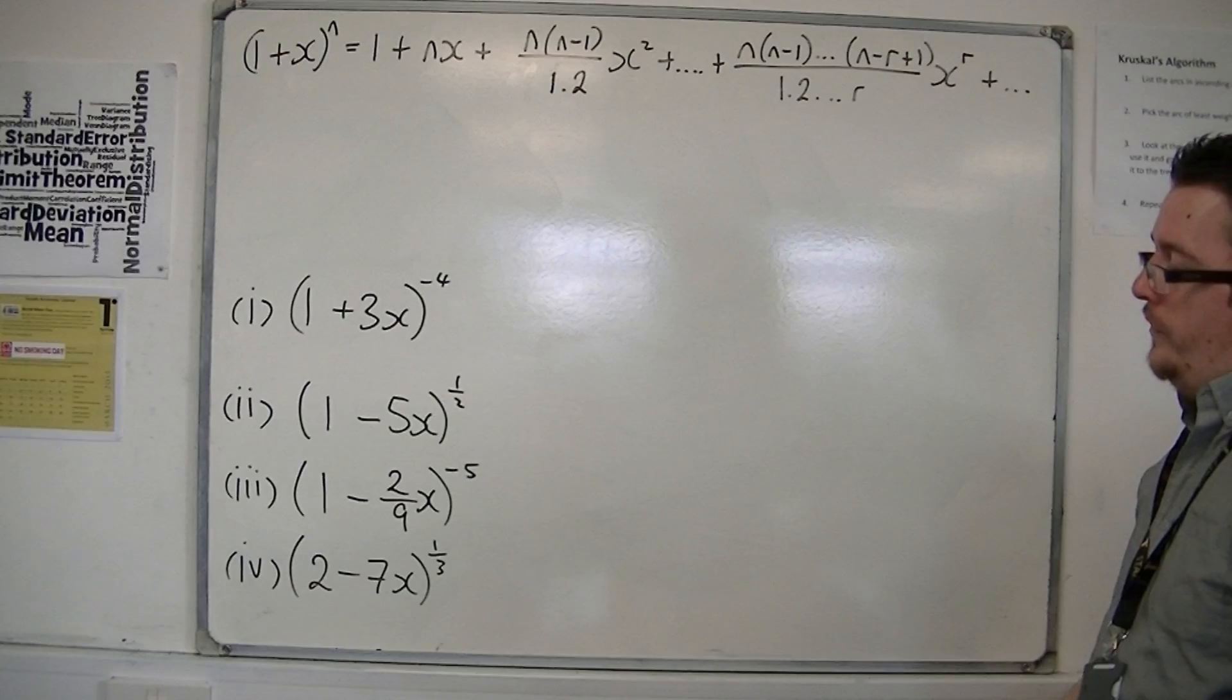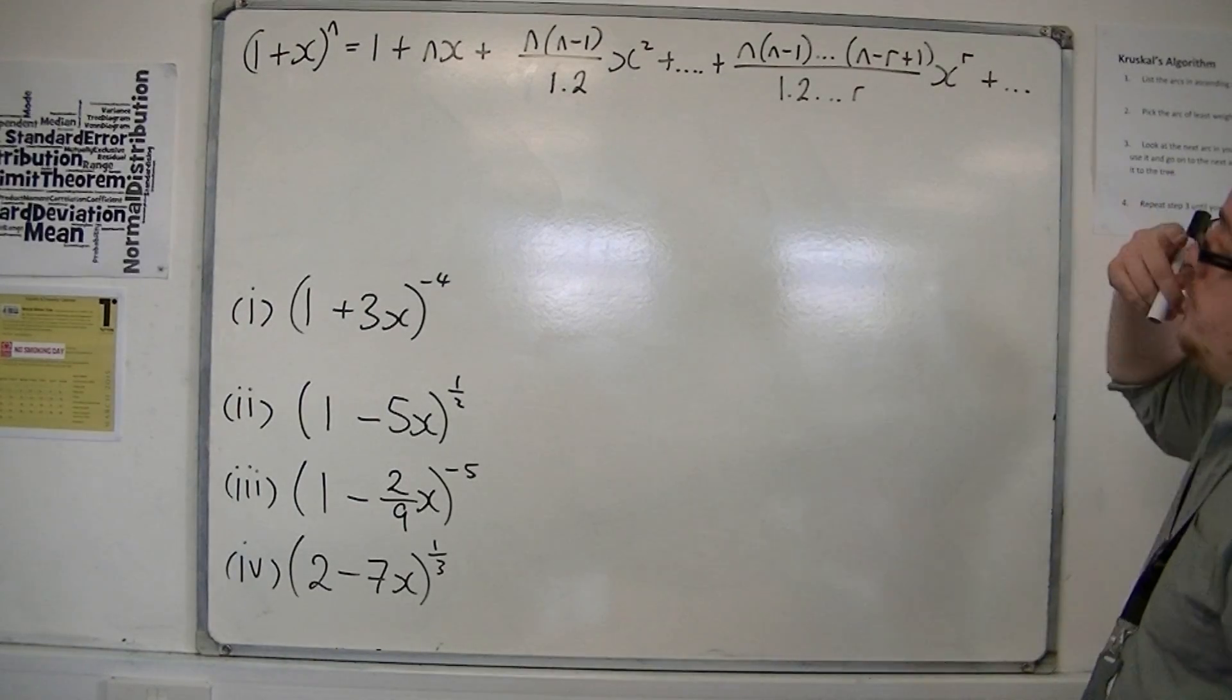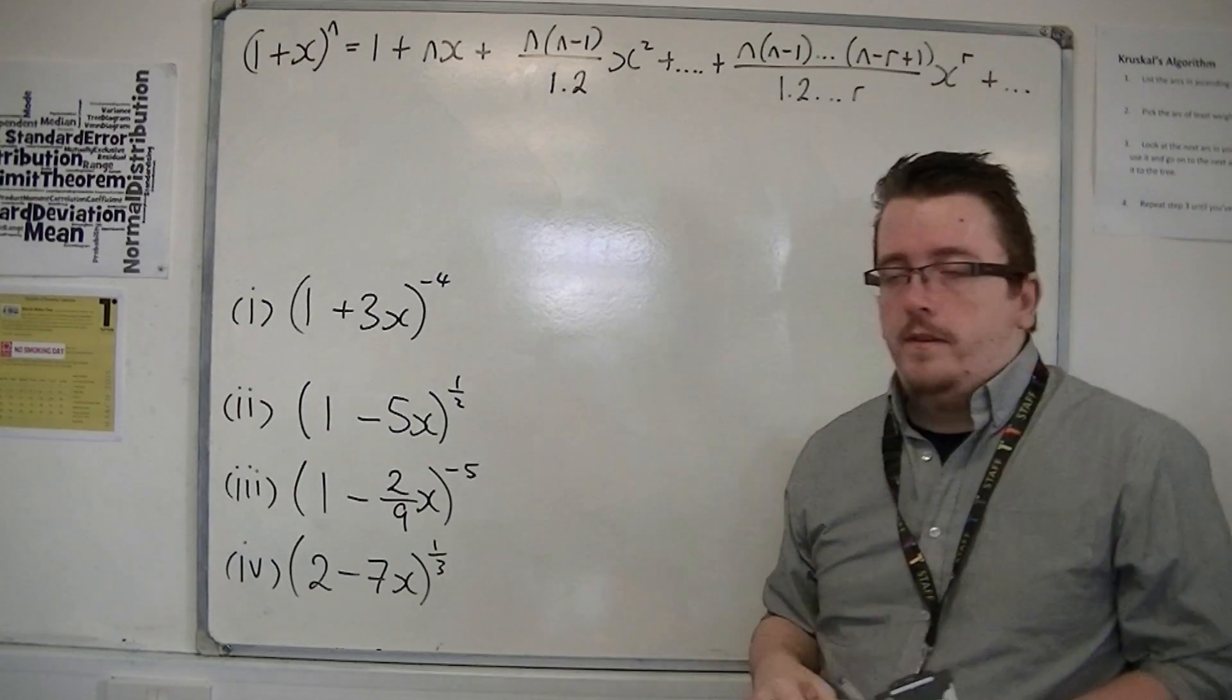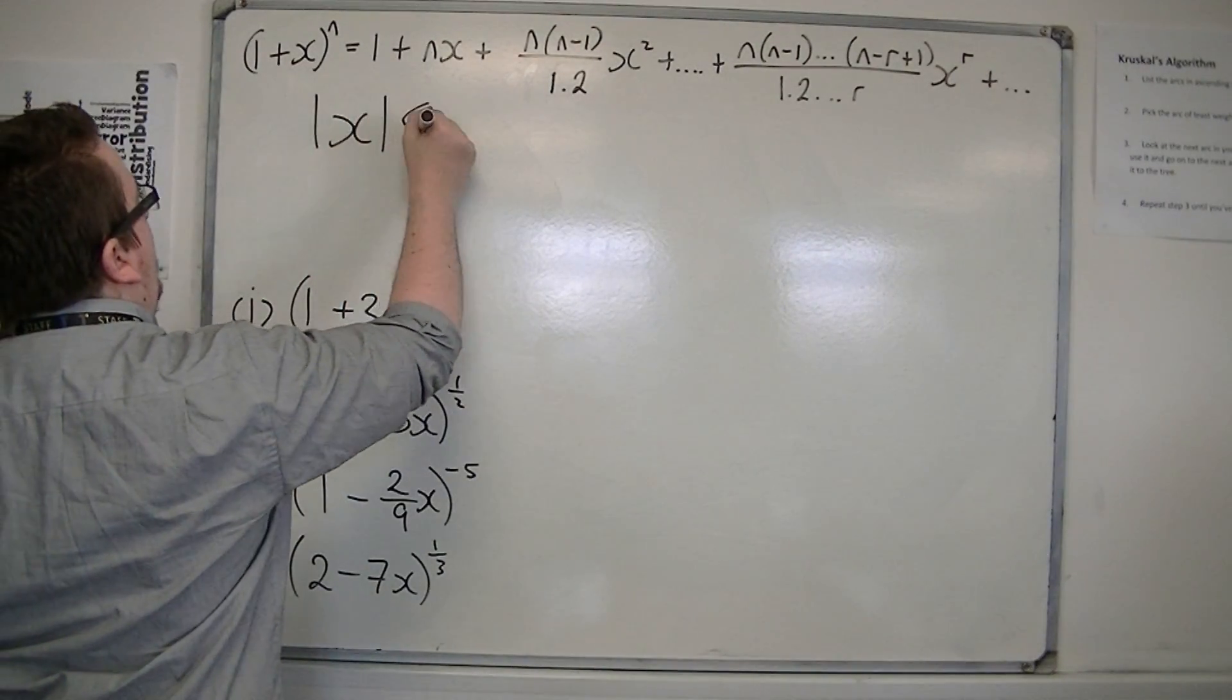Otherwise, it diverges. And for the original expansion, 1 plus x to the n, this is true when mod x is less than 1.